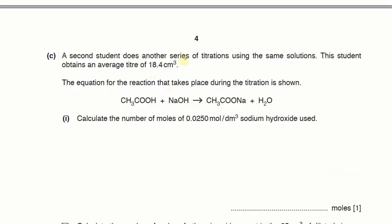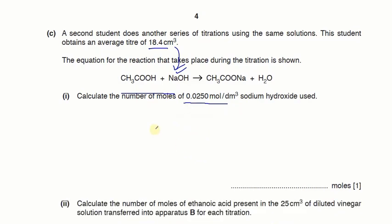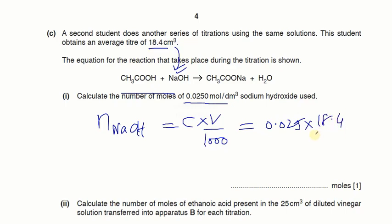Next. The second student does another series of titrations using the same solution. The student obtains an average titre of 18.4. So they have given you a value. So forget about the values that you have got. Now you have to use 18.4 in the upcoming calculations. So 18.4 cm³ is actually the volume of sodium hydroxide. And here we got the concentration. Now we can find the moles of sodium hydroxide. So you know moles is equal to C into V. And volume should be in dm³. So we will divide it with 1000. So it would be 0.025 times 18.4 over 1000. That will give you the moles. So it would be 0.00046. These are the moles of sodium hydroxide in 18.4 cm³.